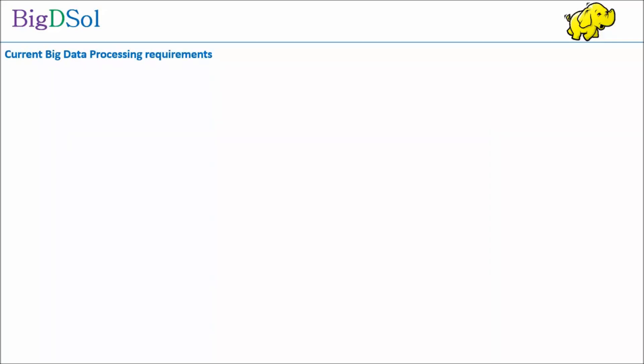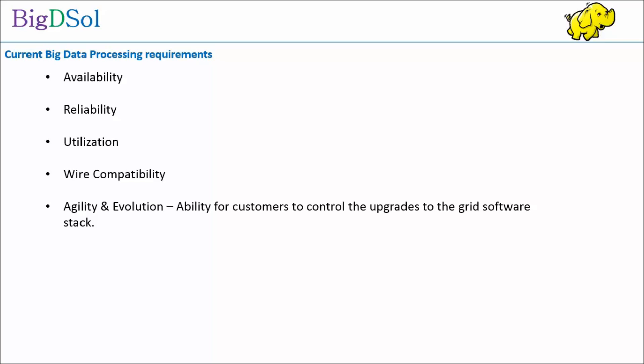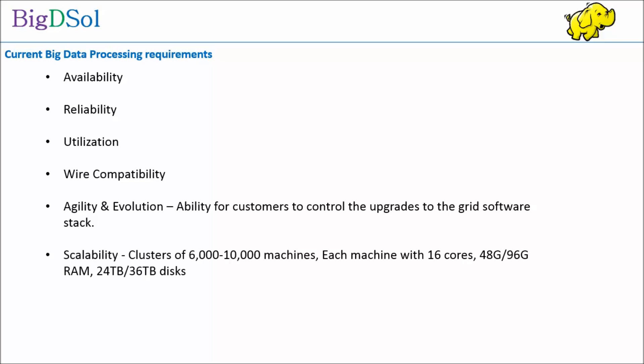Now let's look at current data processing needs: availability, reliability, utilization, wire compatibility, and agility — the ability for customers to control upgrades to the grid software stack. Scalability is also needed: clusters of 6,000 to 10,000 machines, each with 16 cores, 48 GB to 96 GB RAM, and 24 TB to 36 TB disks. As hardware costs are reducing and capabilities are improving, this configuration is almost double what Hadoop 1 was designed for.